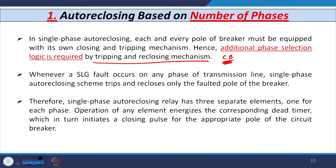For example, if a fault occurs in the R phase, only the R pole of the breaker opens while the other two healthy phases — Y and B — remain closed. The single phase auto reclosing relay has three separate elements, one for each phase. Operation of any element energizes the corresponding timer which gives the closing pulse for the appropriate pole of the circuit breaker. Single phase auto reclosers are slightly costlier than three phase auto reclosers.